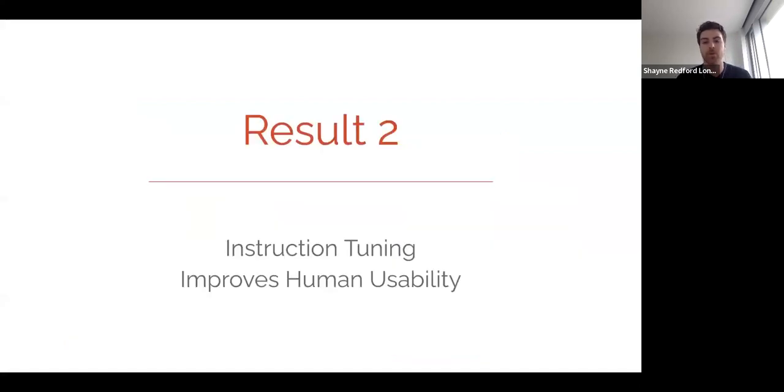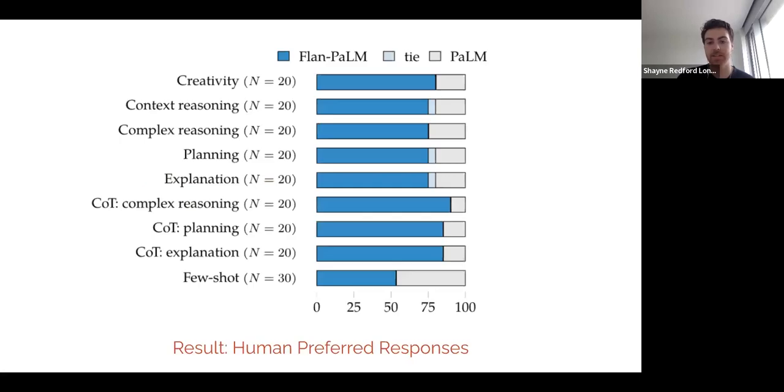The second result shows that instruction tuning does improve human usability on non-academic tasks, even though we did use only academic tasks for fine-tuning. So here you can see in blue the win rate, according to human preferences, in a blind trial of the Flan-PaLM responses versus the PaLM responses.